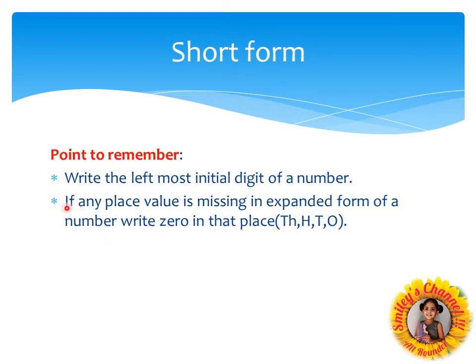The second point: if you observe that any place value is missing in the expanded form of a number, you need to write 0 in that place.